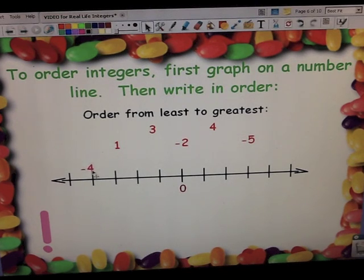So I'm going to move negative 4, 4 units to the left: 1, 2, 3, 4. Here's your negative 4. 1 is positive, so it's going to go 1 unit to the right. 3 is also positive, so it goes 3 units to the right.